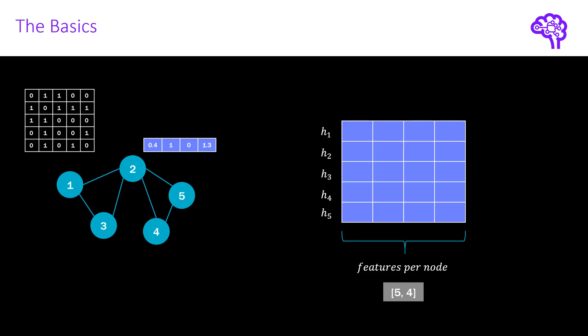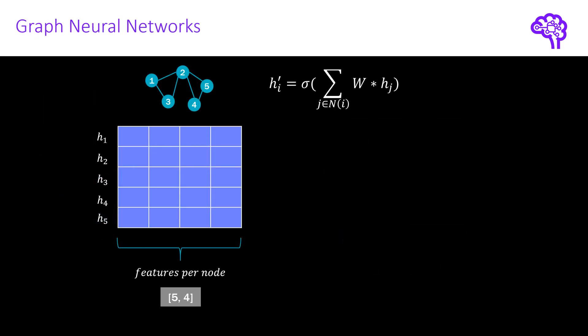Okay, now how is this node feature matrix used in a general graph neural network layer? For graph neural networks, the general formula describing the update of a single node embedding looks like the one shown here. Later in this video, we will see how we can extend this formula to use the attention mechanism.